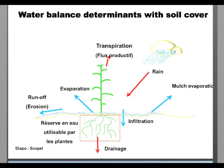Regarding water balance determinants with soil cover: soil cover water balance consists of infiltration, which divides into deep drainage, plant-use water, and evaporation. The water provided by rainfall, if not infiltrated, is lost through runoff, erosion, or evaporation. In CA cropping systems, the main objective is to diminish these losses and increase conservation of water for plant use.